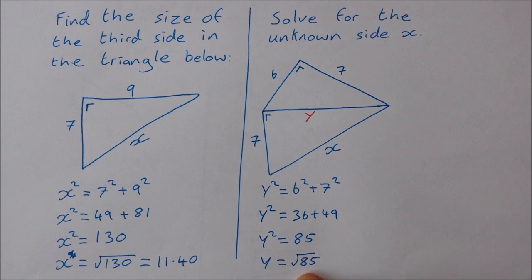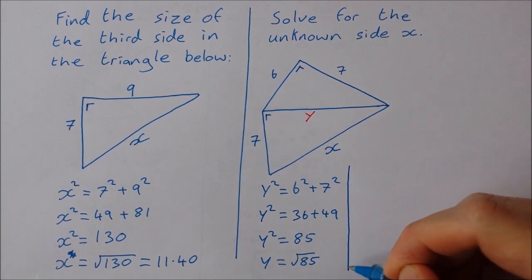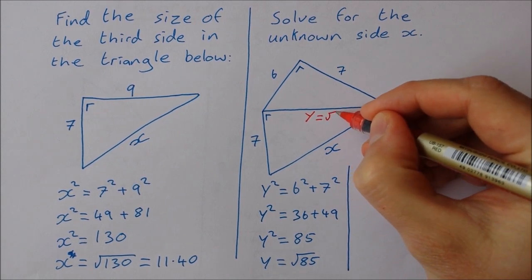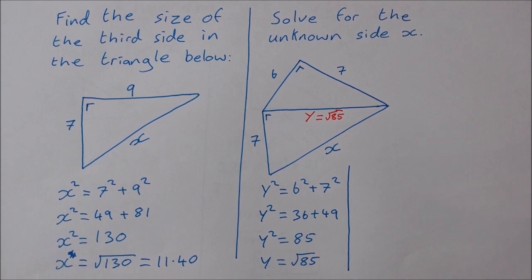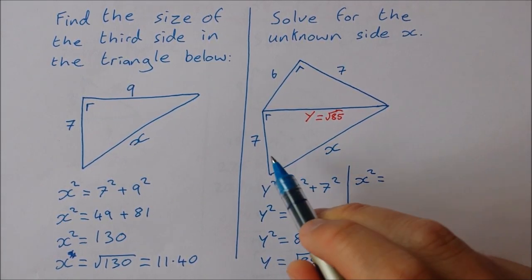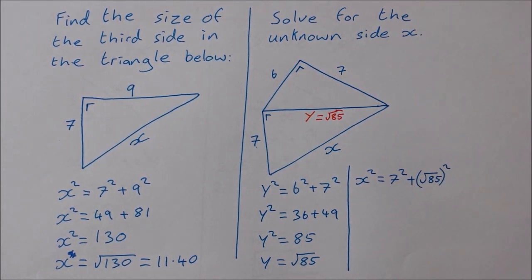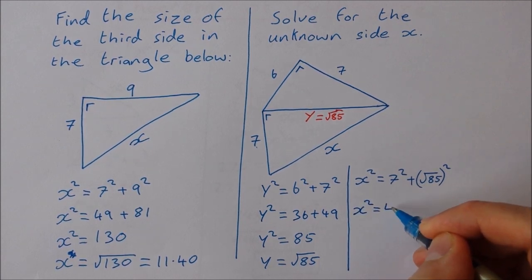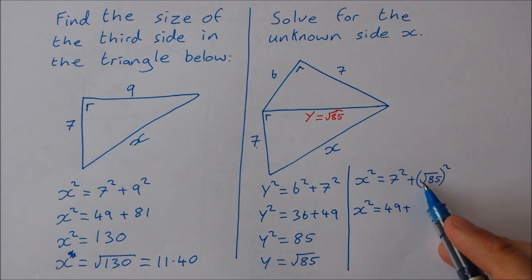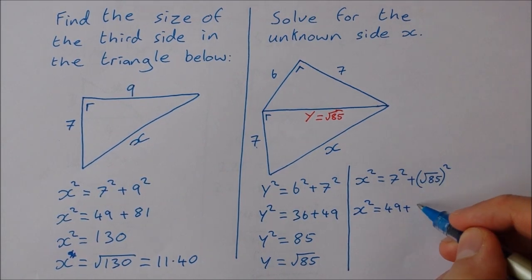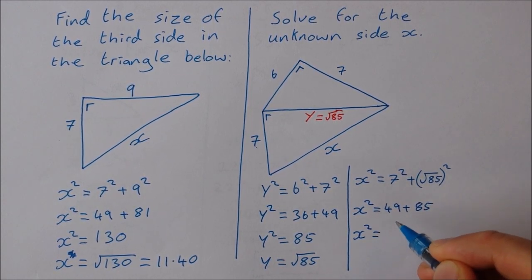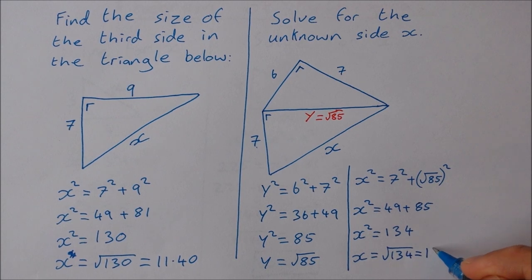Now I'm going to leave this in surd form. I'm going to leave it as square root of 85. You'll see why in a minute. There's no point in me taking the square root of it just now. So I have y there, which is root 85. So now I can solve for x. x squared is equal to 7 squared plus root 85 squared. So x squared is equal to 49 plus, and now this is why I left it in surd form, because the square root of 85 squared is 85. So x squared is equal to 49 plus 85, which is 134. So x is equal to the square root of 134, which works out to be 11.58.